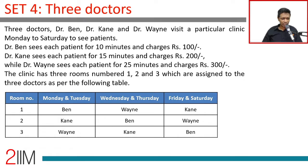The clinic has three rooms numbered 1, 2, and 3, which are assigned to the three doctors as per the following table: Ben, Cain, Wayne, Wayne, Ben, Cain, Cain, Wayne, Wayne, Cain, Wayne, Ben.